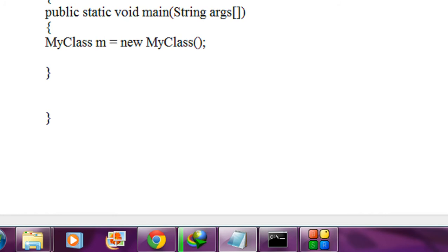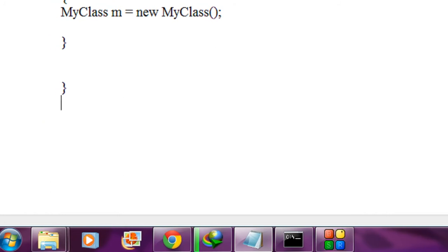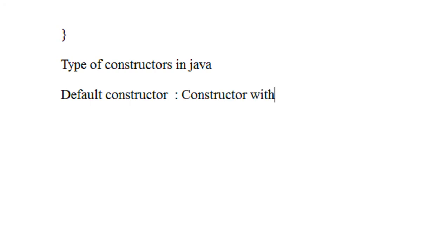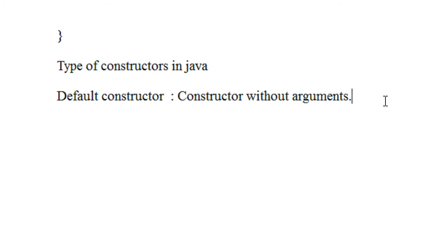Generally there are two types of constructors available in Java. The first one is the default constructor. A default constructor is nothing but a constructor without any argument — a constructor without any argument is called a default constructor. The example we already saw in the previous part is an example of a default constructor.